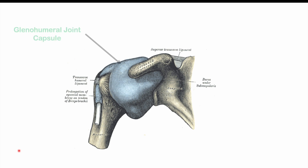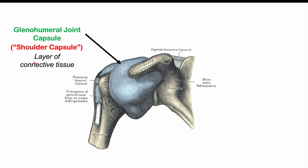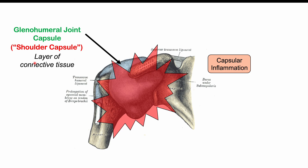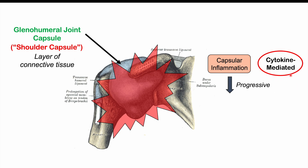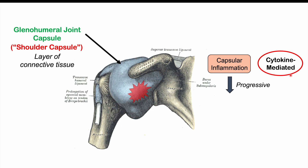The shoulder is enveloped by the glenohumeral joint capsule, also known as the shoulder capsule — a layer of connective tissue. In adhesive capsulitis, there is capsular inflammation of the glenohumeral joint capsule, which appears to be related to cytokine-mediated action. This inflammation is progressive, and as it continues and starts to reduce, the capsule itself is replaced by fibrosis or thickening — the capsule becomes thickened over time.